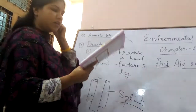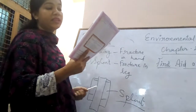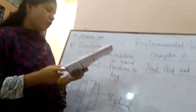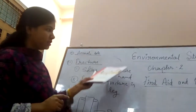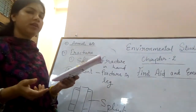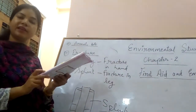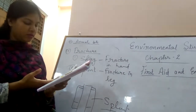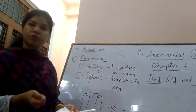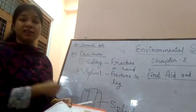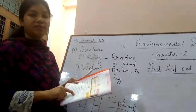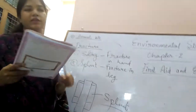Next: make a chart of the methods of first aid with appropriate pictures and display in the class — we will do that when possible. For self-assessment: when a bone gets broken, it is called a fracture — not a burn injury or bleeding. Fracture is the right answer.